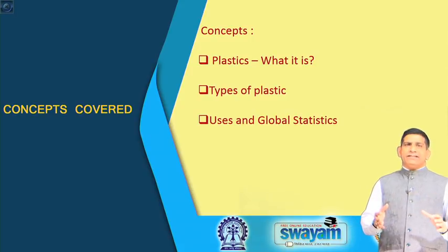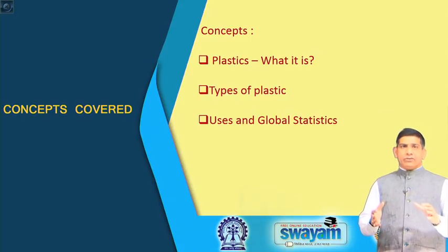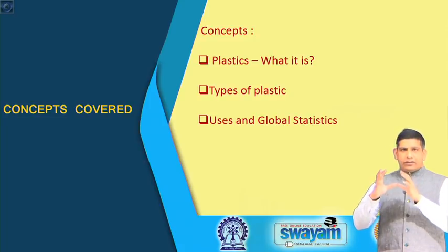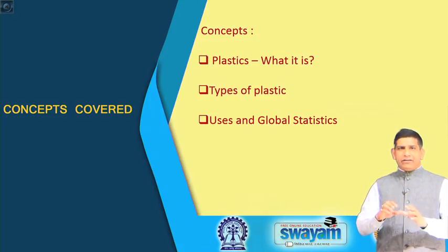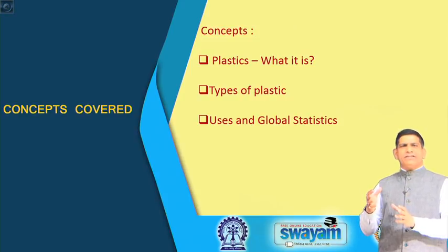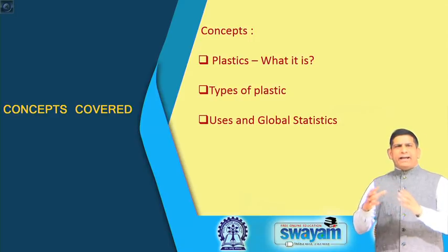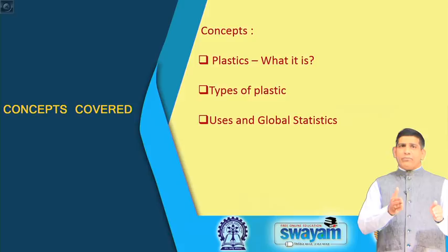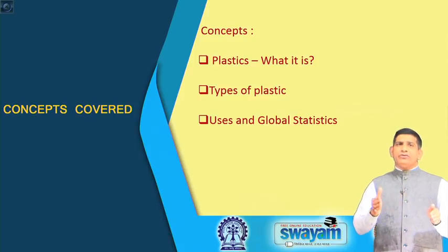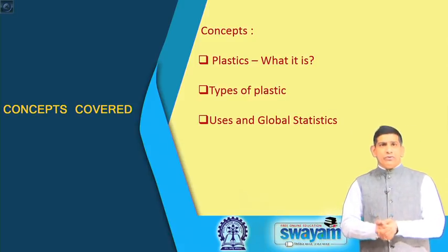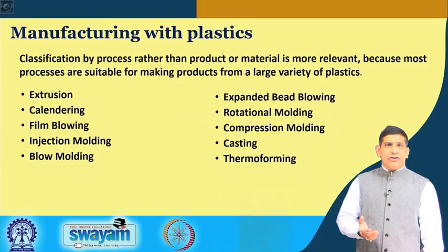This course is on plastic waste management. The rationale behind looking at what is plastic, types of plastic, usage, and global statistics is to get an idea of how much plastic is really out there. Because whatever waste will be produced will essentially be produced from these plastics which we are using in different applications.